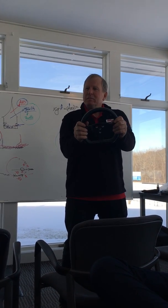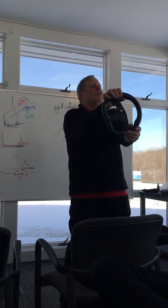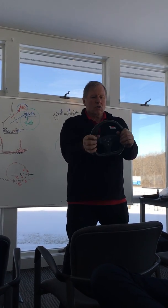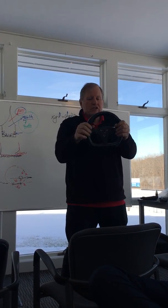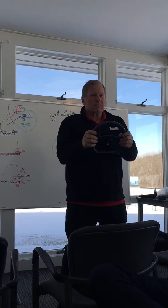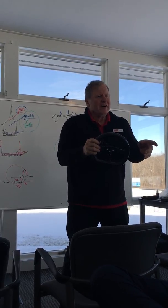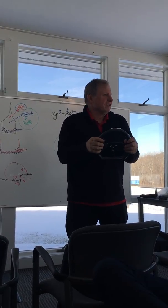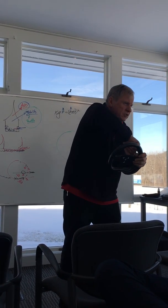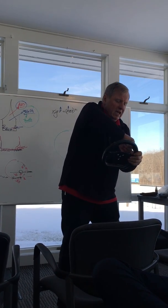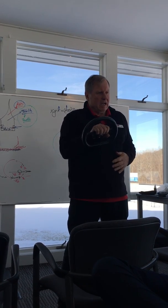I've seen people try to steer with both hands on the wheel and cross them, or with one hand do this — which puts your arm in a twisted position. Anybody ever have their arm twisted when they were a kid by a bigger kid? This is a weak position. Not only that, but your arm is across in front of the airbag.